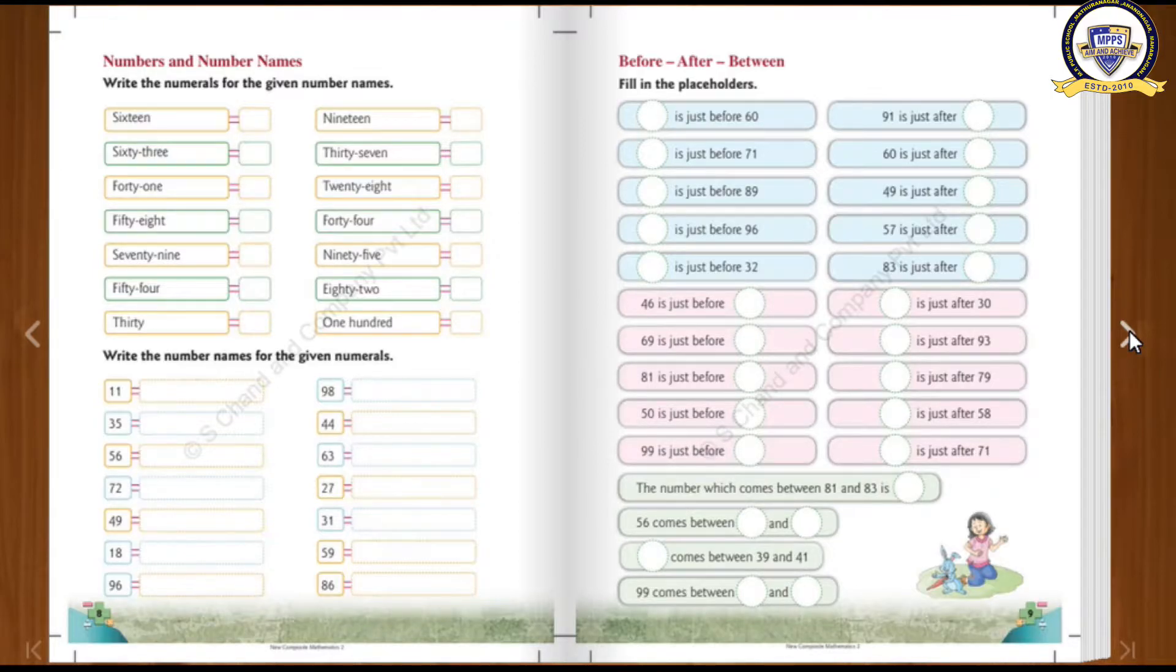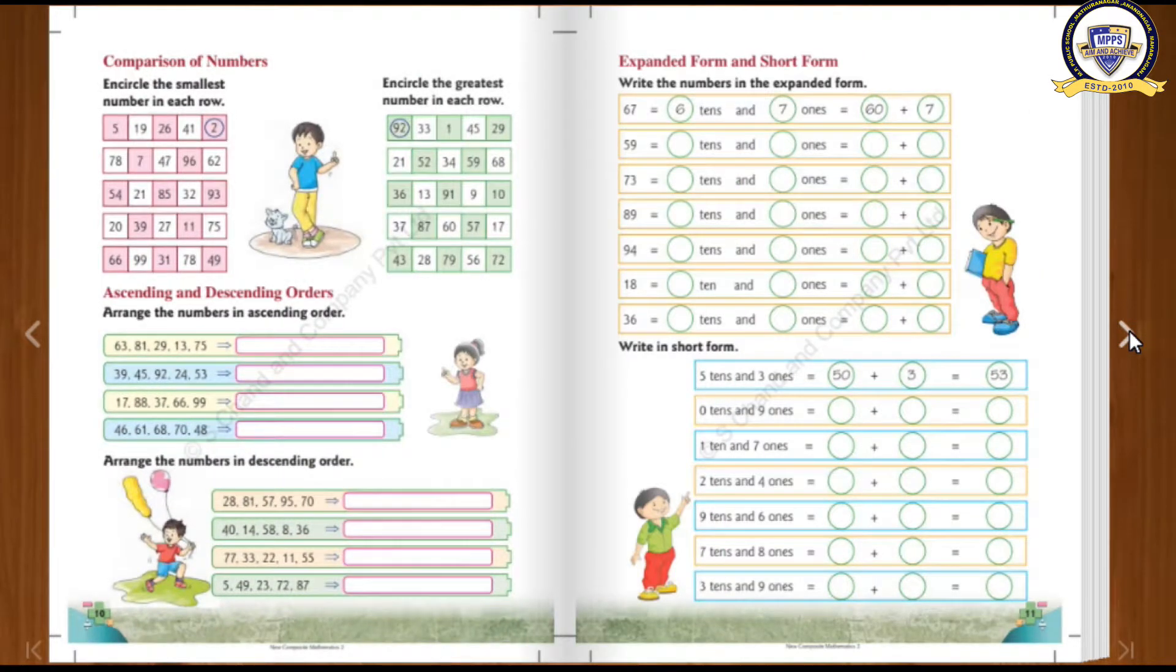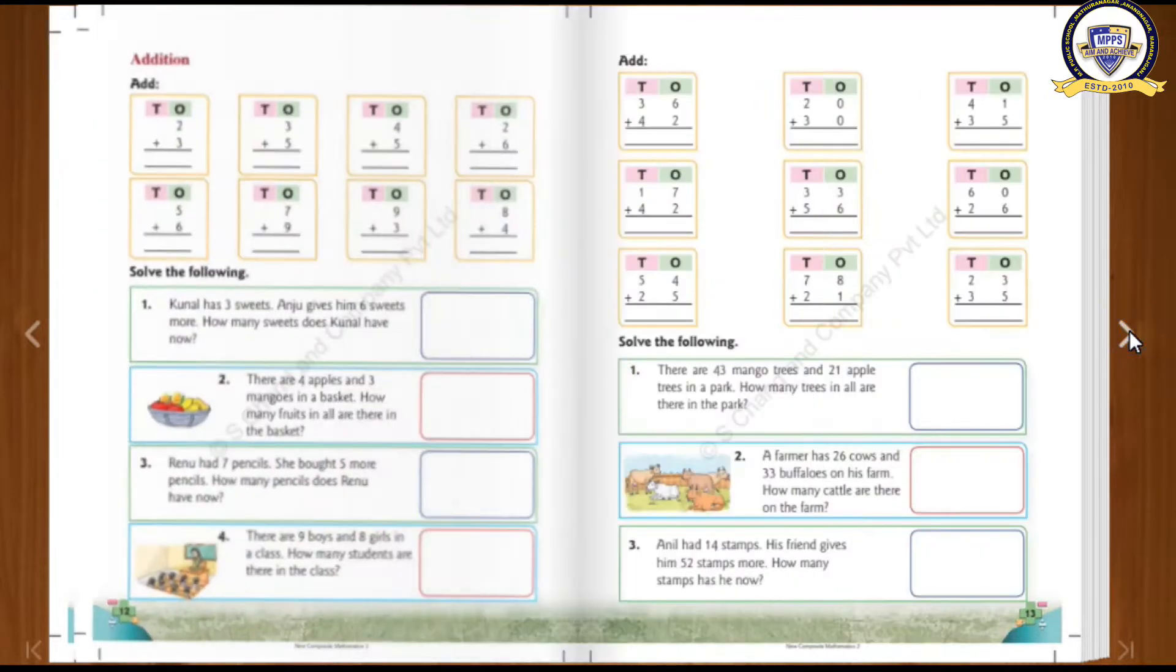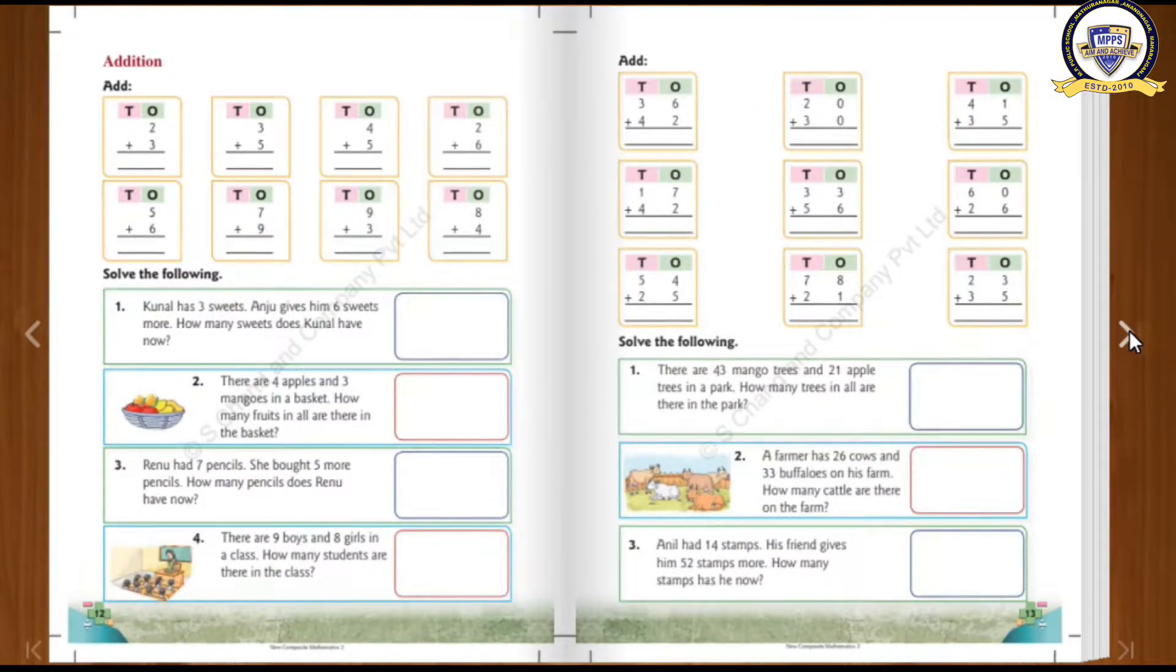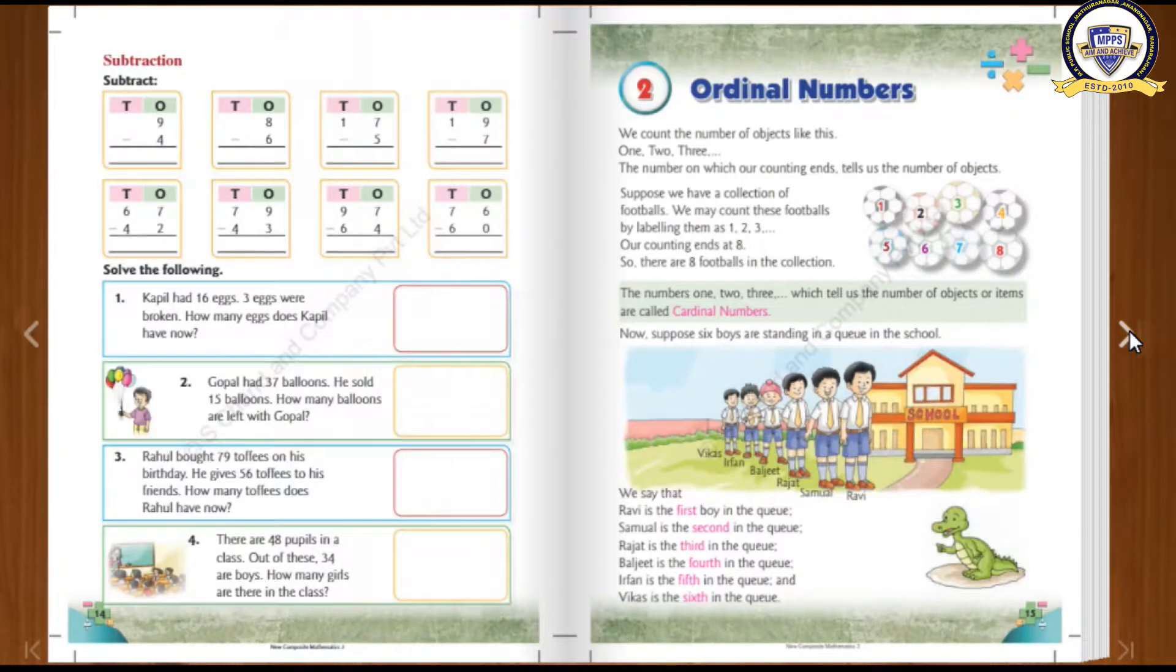What is number names? What is number numerals? Collection of figures for a particular number. And what comes before, what comes after, what comes between. And smallest number, greatest number, ascending order, descending order, expanded form, short form, addition, subtraction, word problems. Such a lot, many topics you covered here in your first chapter with the help of your teacher.